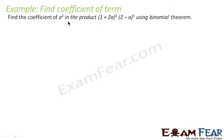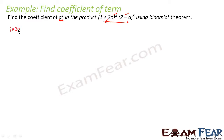In this example we have to find the coefficient of a to the power 4 in the expansion of a given expression using the Binomial Theorem. We know how to expand this — we will expand each part first and then multiply. So we expand 1 plus 2a to the power 4.